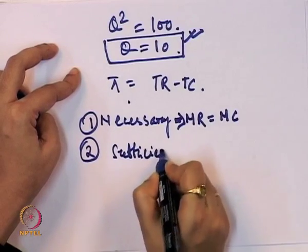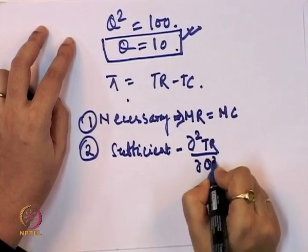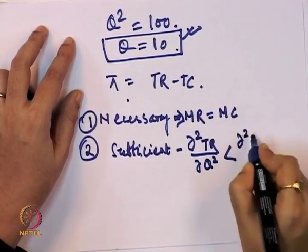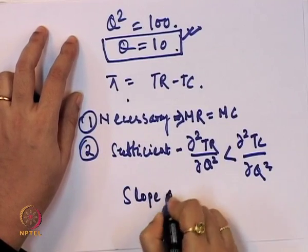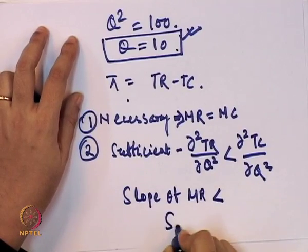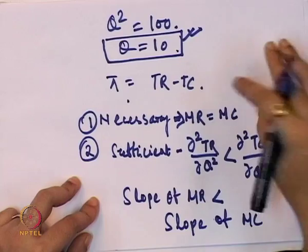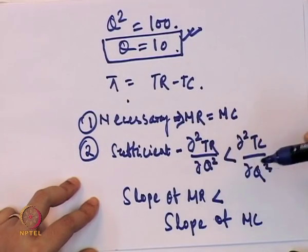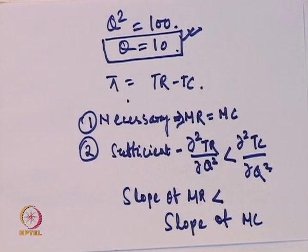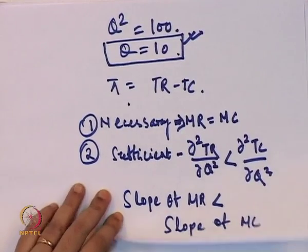There are two conditions to maximize profit. The first (necessary / first order condition) is that marginal revenue must equal marginal cost: MR = MC. The second (sufficient / second order condition) is that d²TR/dQ² < d²TC/dQ², meaning the slope of the MR function must be less than the slope of the MC function.